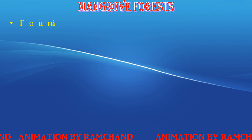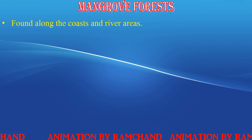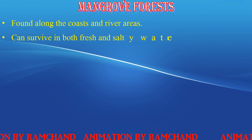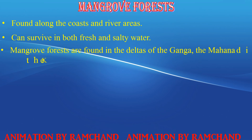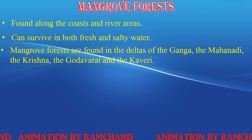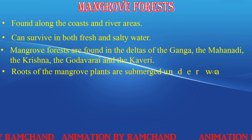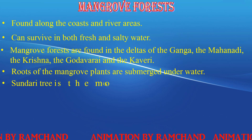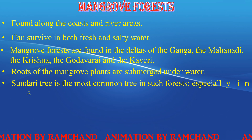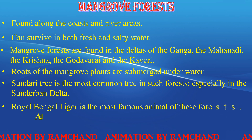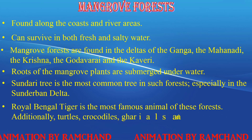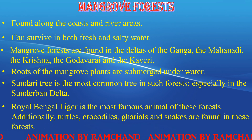Mangrove forests are found along coasts and river areas and can survive in both fresh and salty water. They are found in the deltas of the Ganga, Mahanadi, Krishna, Godavari, and Kaveri rivers. The roots of mangrove plants are submerged underwater. The sundri tree is the most common tree, especially in the Sundarbans delta. The Royal Bengal Tiger is the most famous animal, and turtles, crocodiles, gharials, and snakes are also found here.